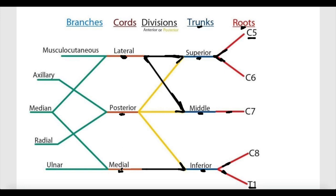The medial cord is formed by the anterior division of the inferior trunk, so it does not combine with anything. On the other hand, the posterior cord is formed by the posterior divisions of all three trunks — the superior trunk, the middle trunk, and the inferior trunk — all giving posterior divisions that combine to form the posterior cord. One way to remember it: posterior divisions form the posterior cord.